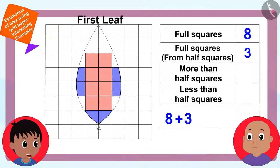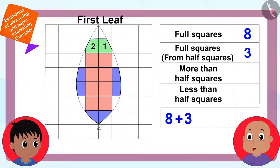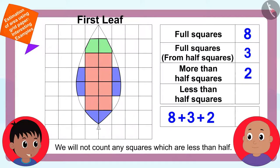And now, finally, can you tell me how many squares are more than half in the area of the first leaf? Raju asked. Two squares. Bablu said excitedly. Absolutely right. We will count them as full squares. Now Raju added two more to the number of full squares. We will not count any squares which are less than half.